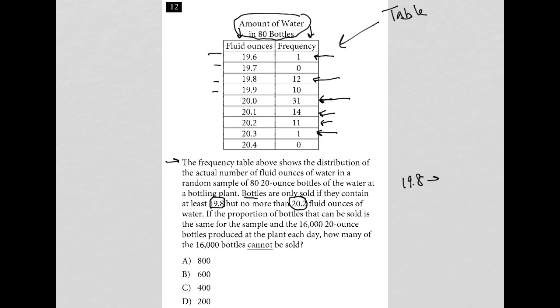So 19.8 to 20.2 equals sold. If it's under that, they're not sold. If it's above that, they're not sold. If the proportion of bottles that can be sold is the same for the sample and the 16,000 20-ounce bottles produced at the plant each day, how many of the 16,000 bottles cannot be sold?